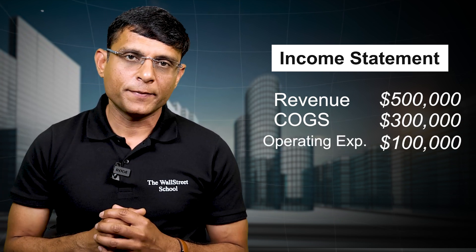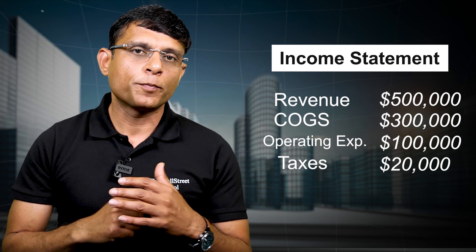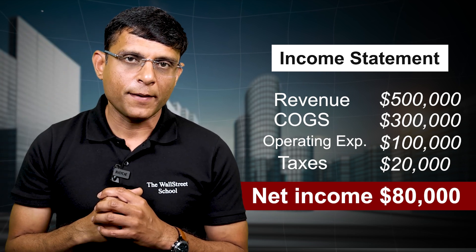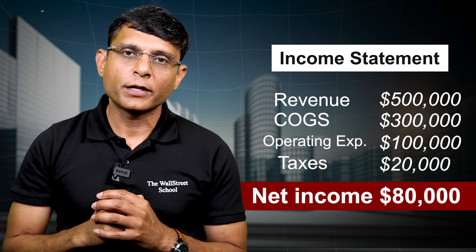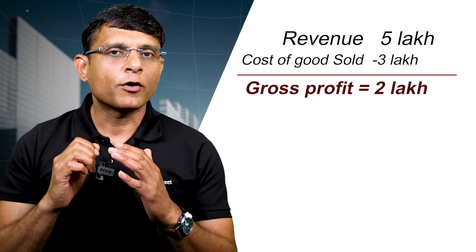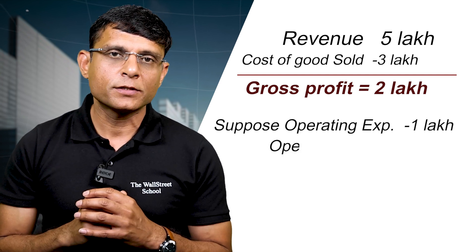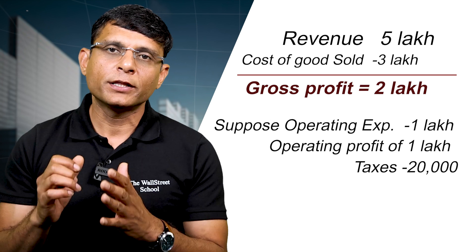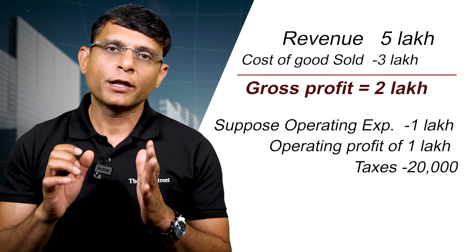Let's look at a quick example. Say the company earned revenue of $500,000 in a year. Cost of goods sold is $300,000, giving a gross profit of $200,000. From that, $100,000 in operating expenses leaves an operating profit of $100,000. After $20,000 in taxes, we are left with a net income of $80,000.